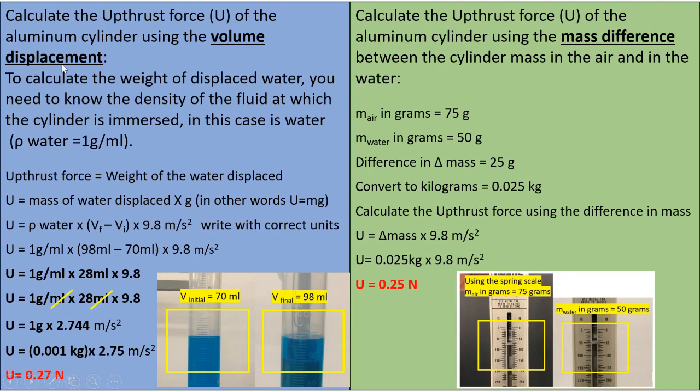To calculate the volume displacement, you need to know the density of the fluid at which the cylinder is immersed. In this case, it is water. So the density of the water is equal to 1 gram per ml. We know the upthrust force is the weight of the water displaced, and the weight is mass times g. But this mass is the mass of the water displaced.